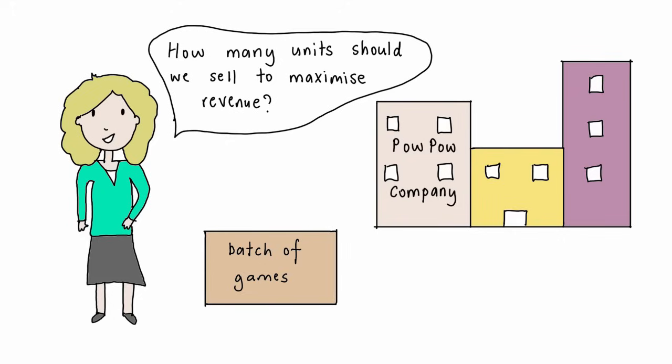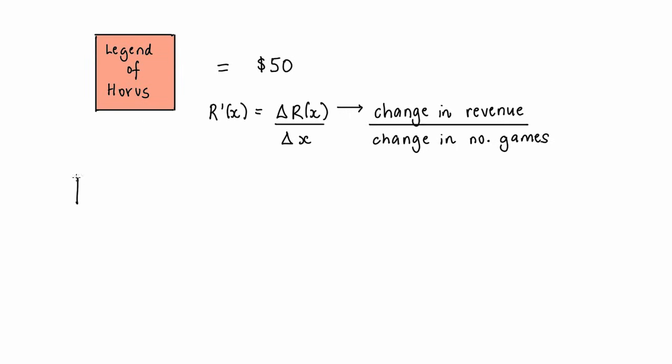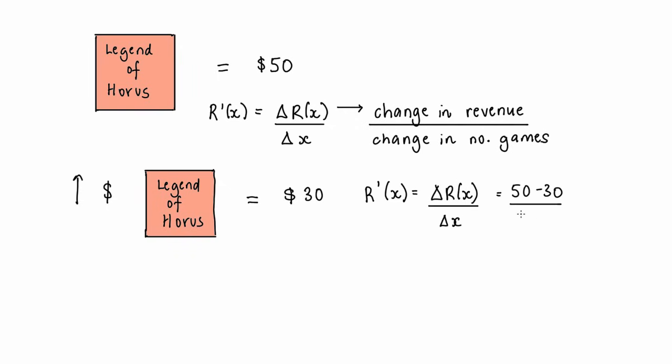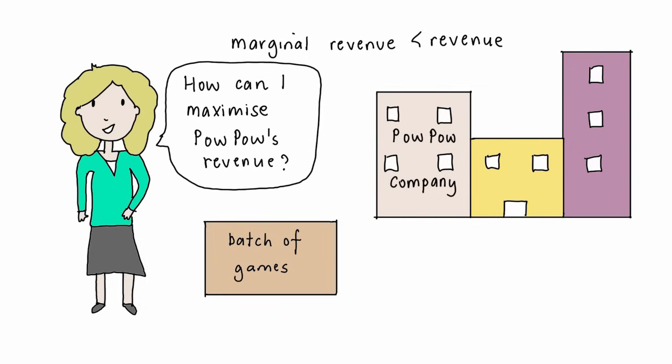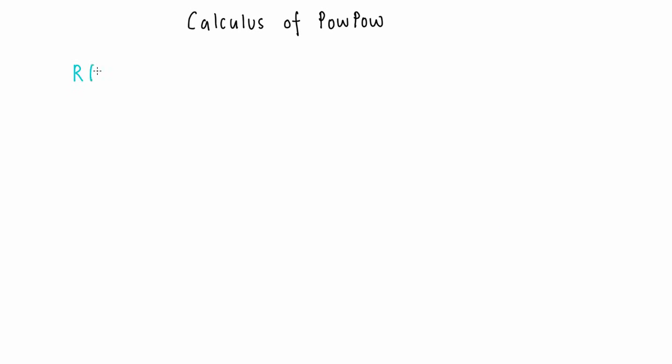This also takes into consideration the fixed costs of producing a big batch of video games. Let's say your business Pow Pow currently sells a new game, Legend of Horus, for $50. This makes the marginal revenue change in y over change in x, so $50 over 1, which is $50. Now you want to increase sales by lowering the cost of the video game to $30. The marginal revenue gained by producing the second video game is change in revenue, so $50 minus $30, divided by the change in the quantity of video games, 1, which equals $20. But this is less than the price that you wanted to charge for an additional video game. As you can see, we have a financial problem here, and we need to model the revenue using calculus to find the optimal quantity of games to maximize your revenue. Let's say we model the revenue for Pow Pow and produce the revenue function as r(x) = 100x - 0.5x².